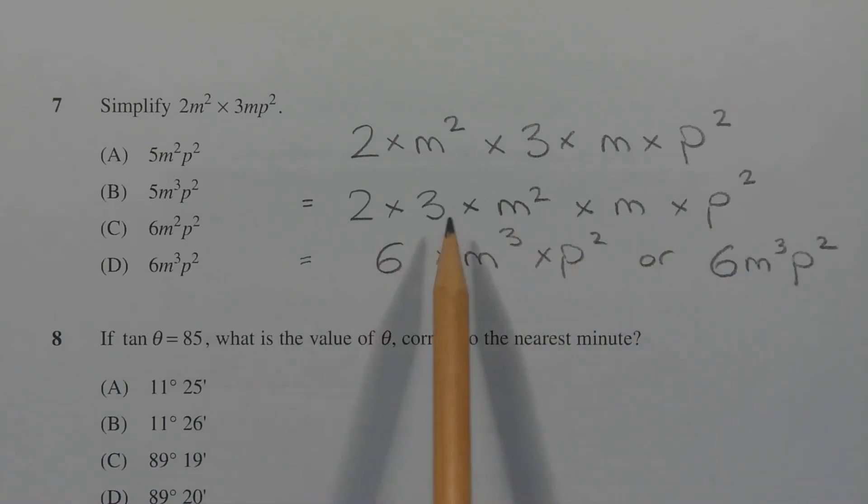Multiplying the numbers together, 2 times 3, we get 6. Now grouping the letters together or the variables of like symbol, m squared times m is m cubed, and the variable p, there's no other variable with p involved, so p squared stays as p squared.